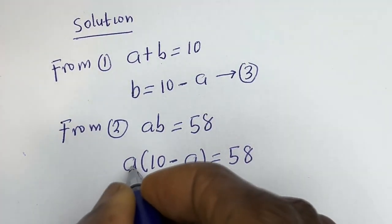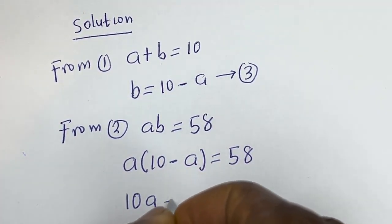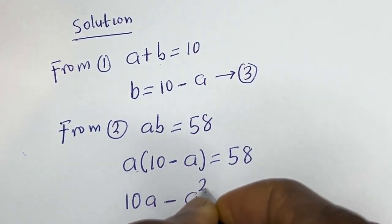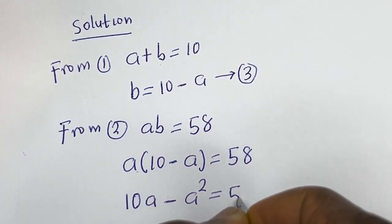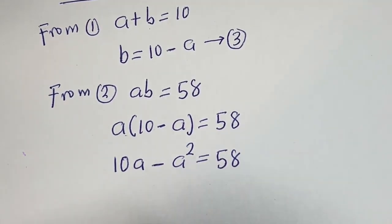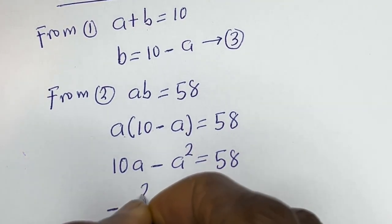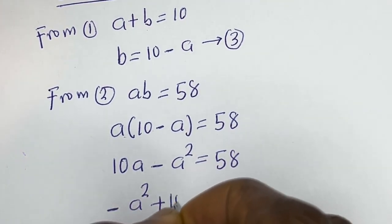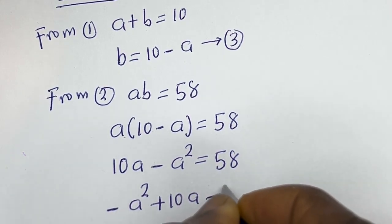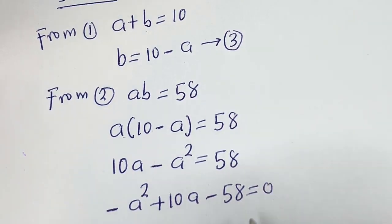Let's open the brackets: a multiplied by 10 is 10a, minus a multiplied by a is a squared, so 10a minus a squared is equal to 58. Rearranging, this gives minus a squared plus 10a minus 58 is equal to 0.